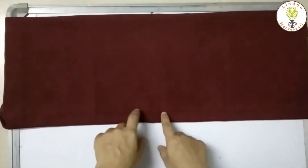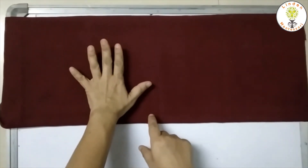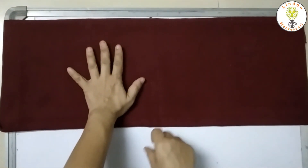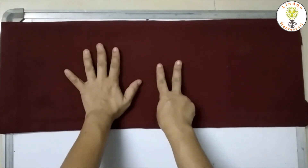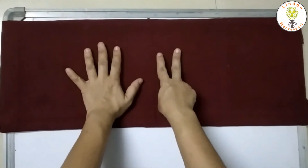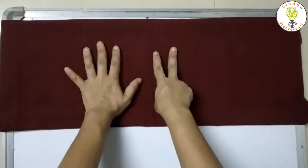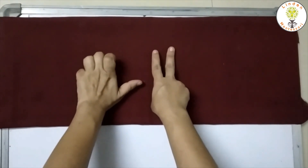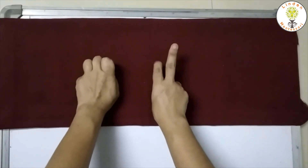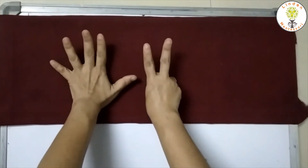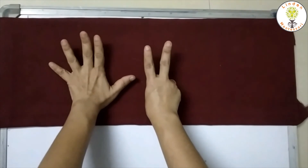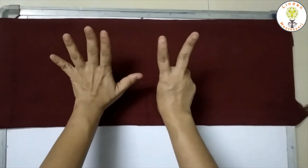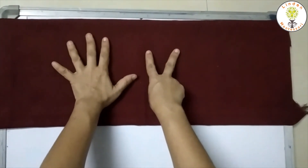We can do addition using our fingers also. Five together with two is same as — let's count. One, two, three, four, five, six, seven. Five together with two is same as seven.